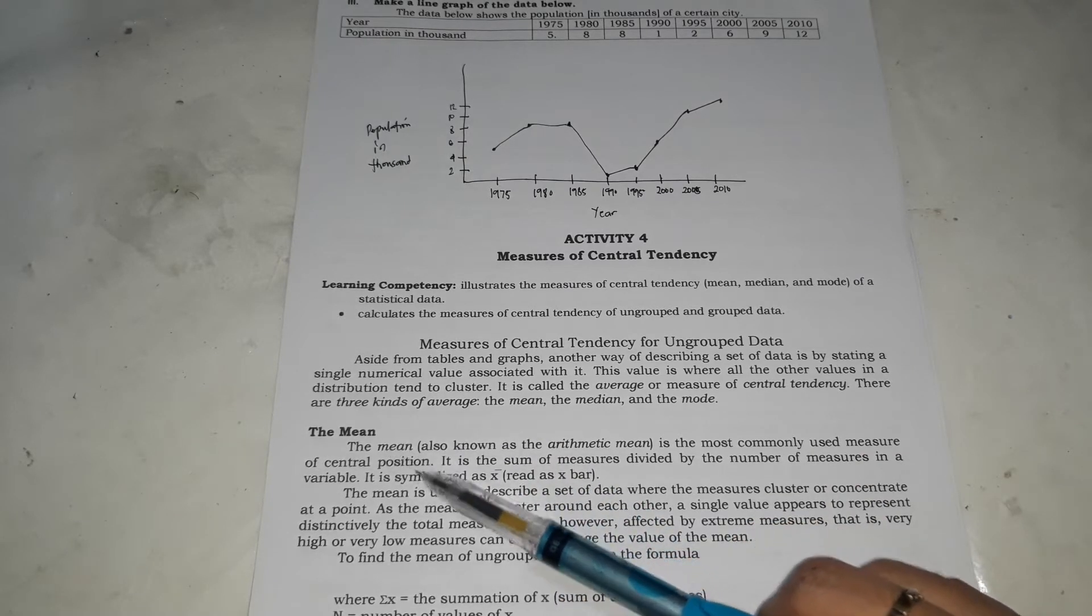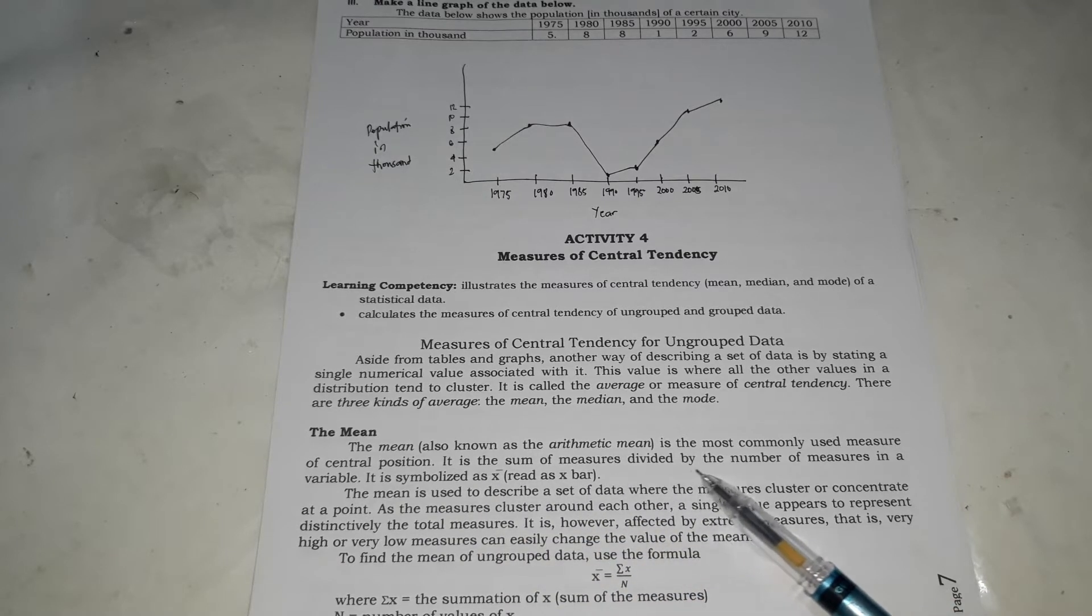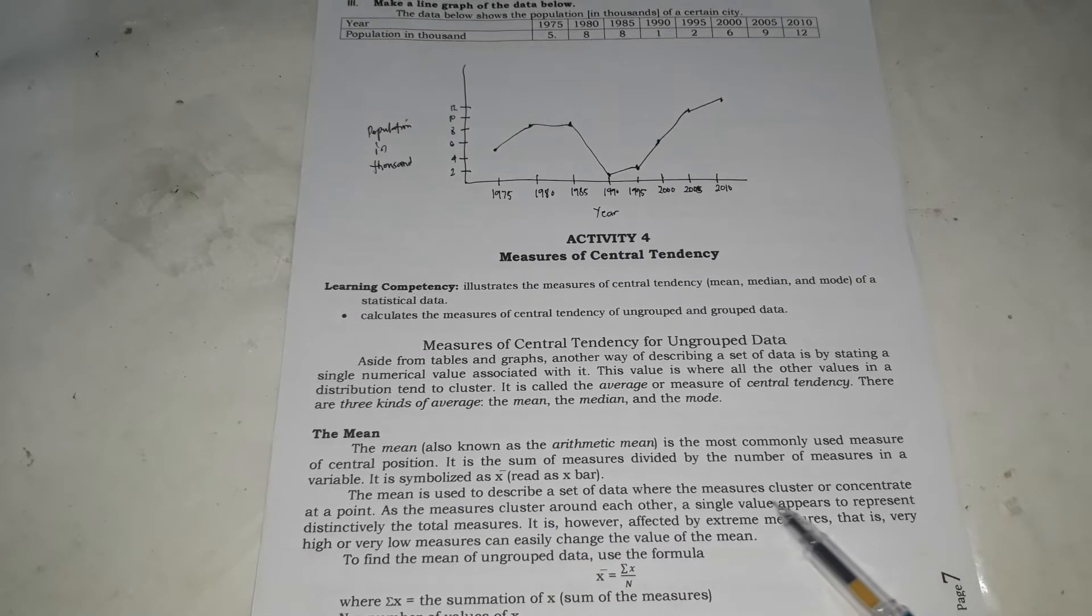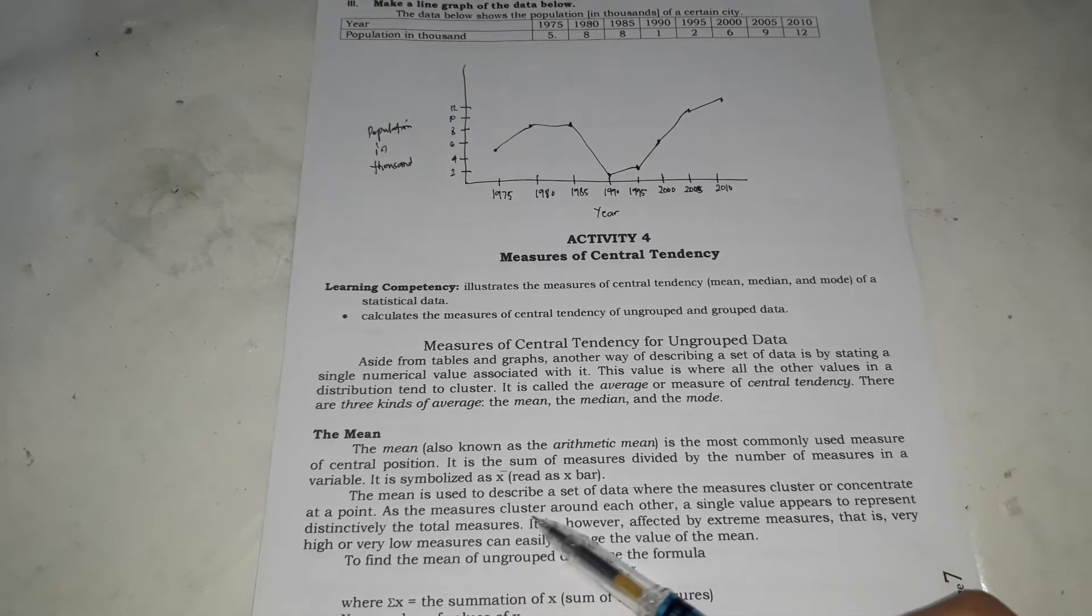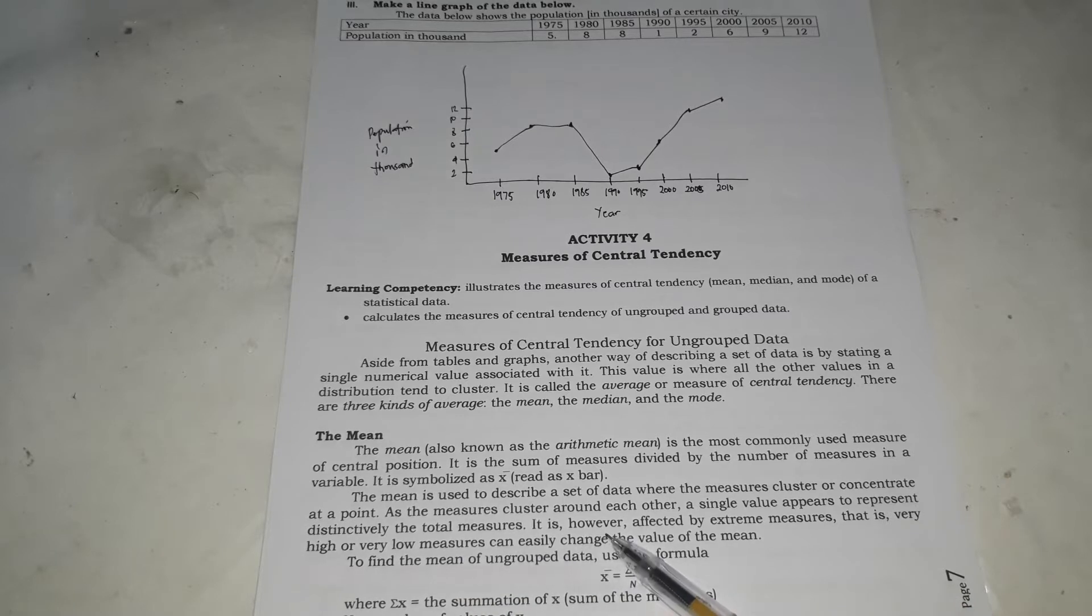The first is the mean, or the arithmetic mean, which is the most commonly used measure of central position. The mean is used to describe a set of data where the measures cluster or concentrate at a point. As the measures cluster around each other, a single value appears to represent distinctively the total measures. It is however affected by extreme values. Very high or very low measures can easily change the value of the mean. Minsan kasi masyadong kalat yung mga results, so it's not very good. The mean is not a very good description kung masyadong malayo yung mga grades.